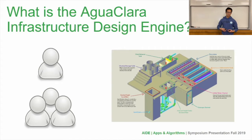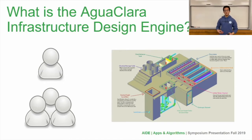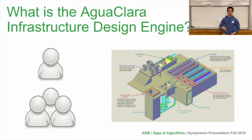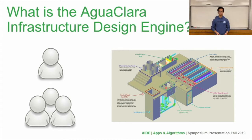A little bit about AID itself, or the Aguaclara Infrastructure Design Engine. One problem that we've faced since the beginning of Aguaclara is the fact that a lot of different communities are going to have different populations and different sizes, so they all are going to need a different drinking water treatment plant design. AID allows us to automatically redesign our plant designs so that we can take in a single variable — which is flow rate — run calculations, and then redesign the entire 3D model of the plant for that community.